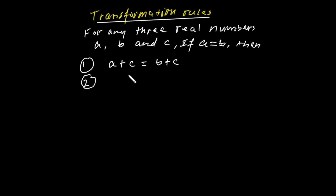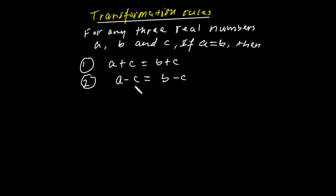If A is equal to B, then A minus C is equal to B minus C. Subtracting the same number from both sides of the equation A equals B does not change that equation. If we subtract the same number from both sides, the equality remains unchanged.